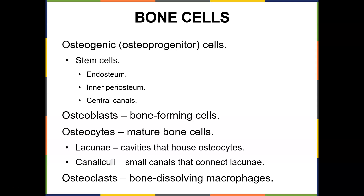Osteocytes are mature bone cells — former osteoblasts that have become trapped in the matrix they deposited. They live in tiny cavities called lacunae and are connected to each other by slender channels called canaliculi, with cytoplasmic processes reaching through to meet neighboring osteocytes. Some osteocytes reabsorb bone matrix, others deposit it, maintaining homeostatic balance.